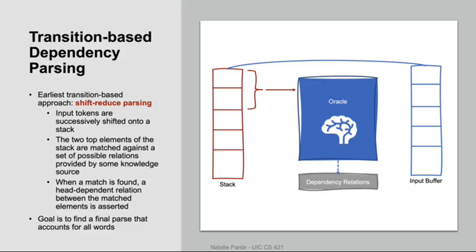Transition-based parsing is a classic approach to dependency parsing that iteratively makes decisions about which transitions or dependency relations to select next, based on the goal of generating a valid dependency parse. Stack-based shift-reduce parsing is generally employed for doing this. In shift-reduce parsing, input tokens are gradually shifted onto a stack, and at a given time point, the top two elements of the stack are matched against the set of all possible relations.